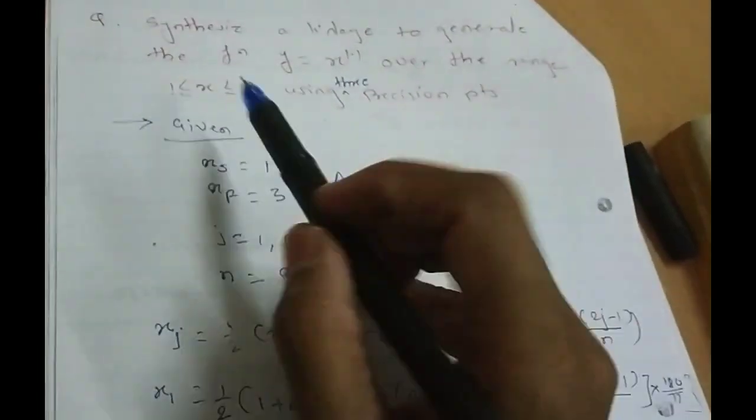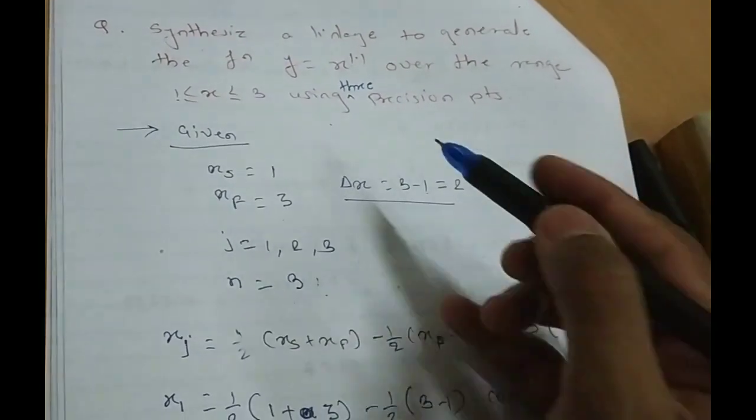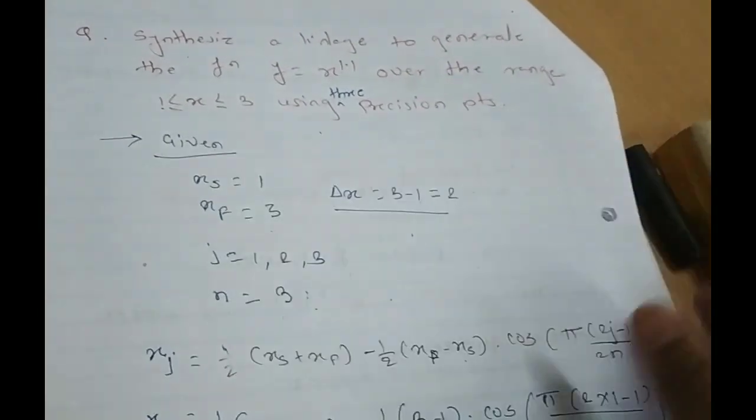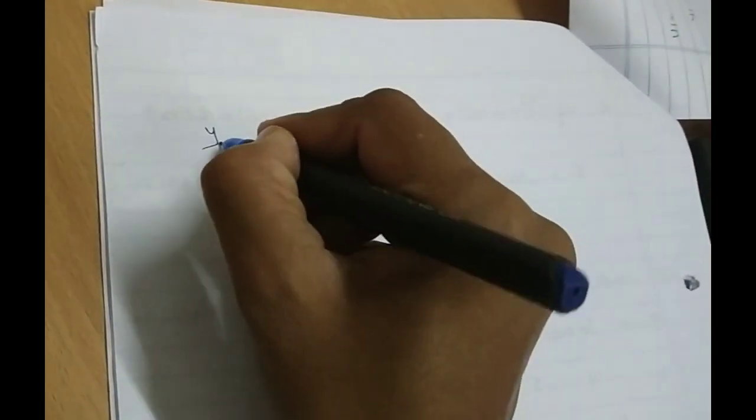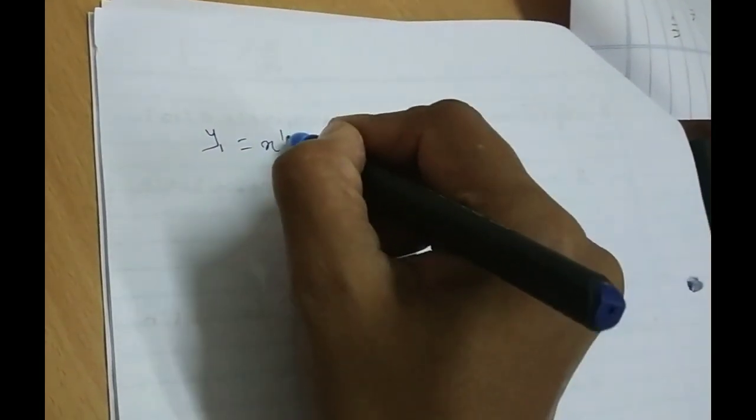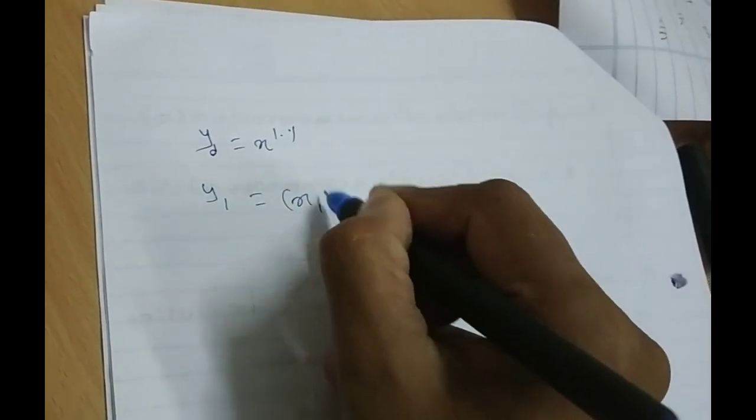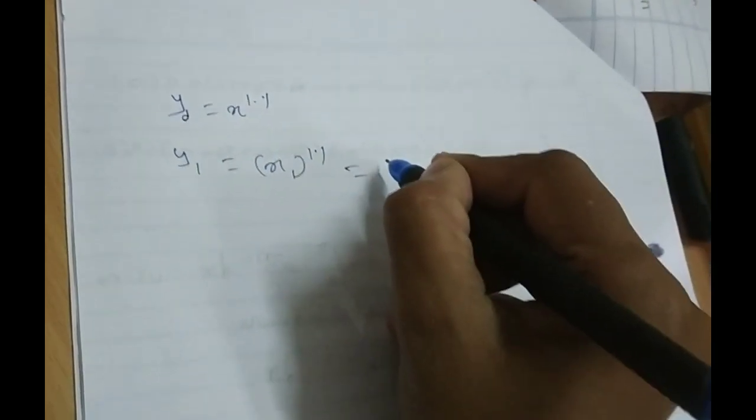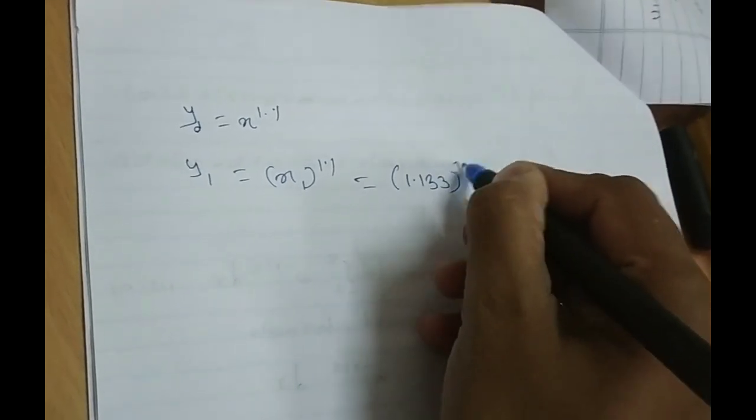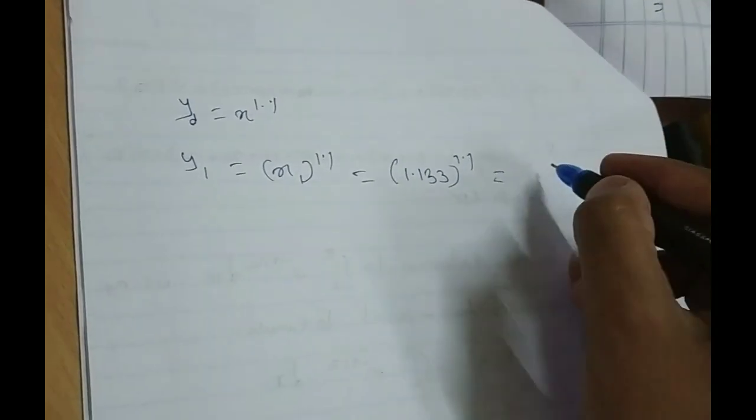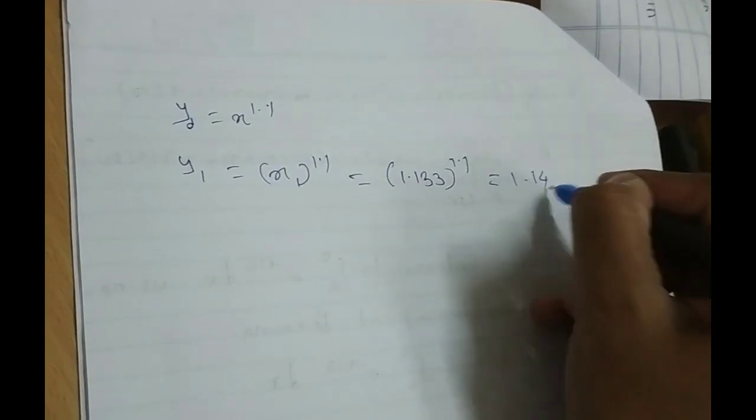How we are going to calculate y1 and y2, y3? So y1 is equal to x1 raised to 1.1, so x equal to 1.133 raised to 1.1 and the answer is 1.147.